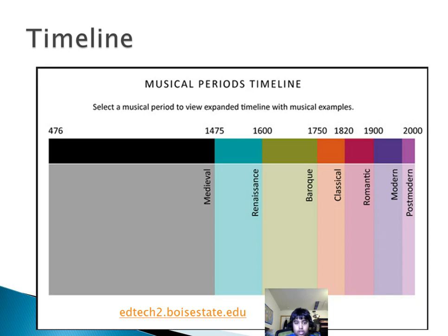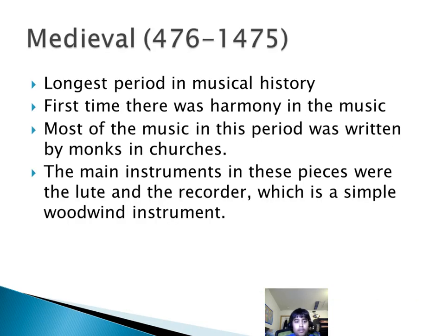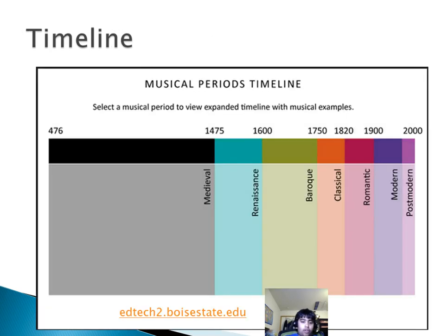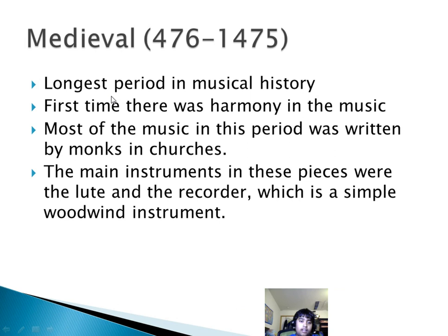The medieval music period was from 476 to 1475. It was the longest period in musical history — as you can see on the timeline, it's definitely the longest. It was the first time there was harmony in music; before there was just melody, but now there was melody and harmony. Most of the music in this period was written by monks in churches.